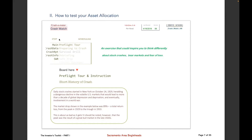Each one of the stops in the scheduling represents a different tab on the spreadsheet. There's the pre-flight tour — the introduction — then 'Preparing to Crash,' where you actually enter your portfolio information, then the 'Crash Report,' which I call the survival drill, then the 'Debriefing' to see what you can learn, and finally 'Safe Trip and Careful Goodbyes.'